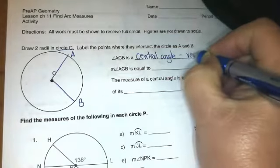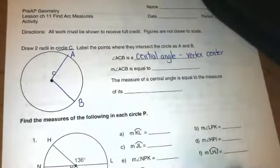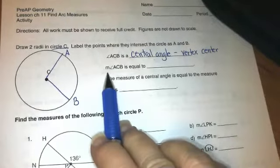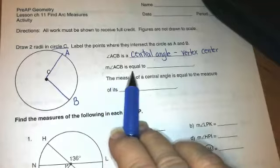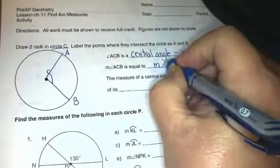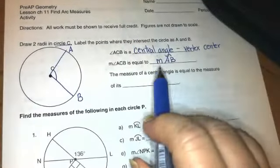Angle ACB is what we call a central angle. A central angle is an angle with the vertex at the center of the circle. And this line down here says the measure of angle ACB.